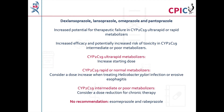This guideline provides recommendations for dexlansoprazole, lansoprazole, omeprazole, and pantoprazole. There is an increased potential for therapeutic failure of these PPIs in patients who are CYP2C19 ultra-rapid or rapid metabolizers, while patients who are CYP2C19 intermediate or poor metabolizers are potentially at an increased risk of experiencing toxicity. The guideline therefore recommends an increase in the starting dose for CYP2C19 ultra-rapid metabolizers, and that a dose increase be considered for CYP2C19 rapid or normal metabolizers when treating Helicobacter pylori infections or erosive esophagitis. A dose reduction should be considered for chronic PPI therapy in CYP2C19 intermediate or poor metabolizers.